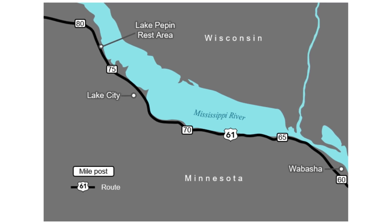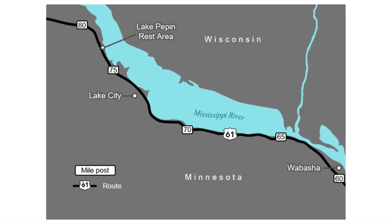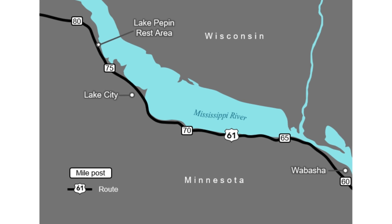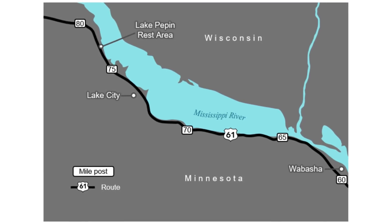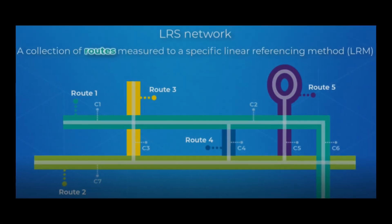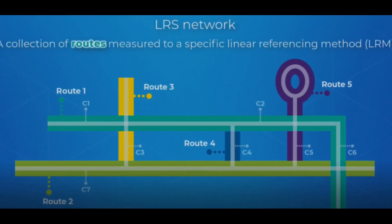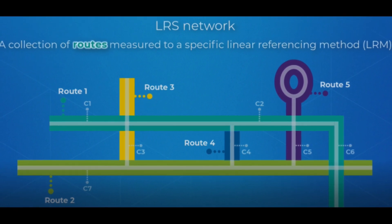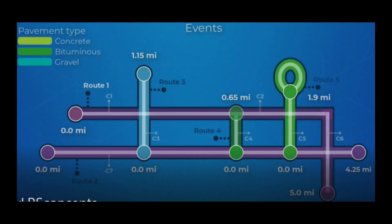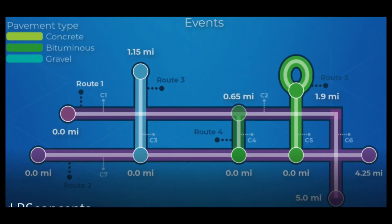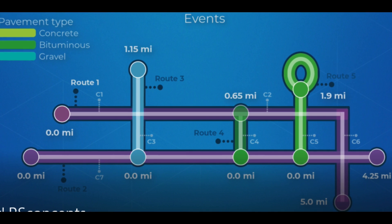Basics of Linear Referencing: Linear Referencing refers to storing geographic locations by using relative position along a measured, M-enabled, linear feature. A location is given in terms of a known linear feature, a route, and a position or measure along that route. When data is linearly referenced, multiple sets of attributes, known as events, provide more information about a route. These events can be associated with any portion of an existing route, independent of its beginning and end.